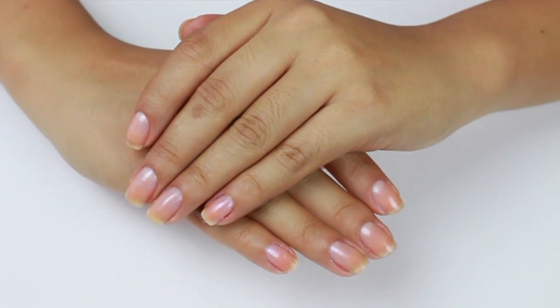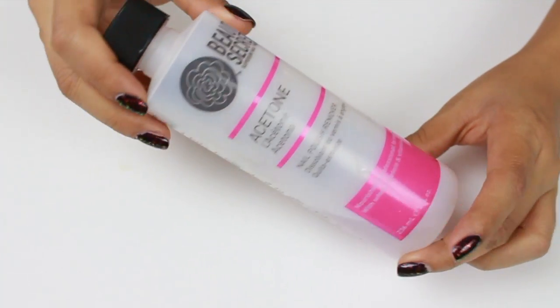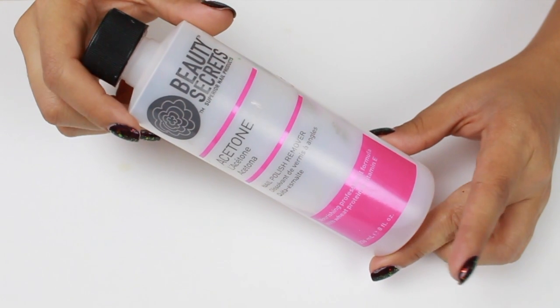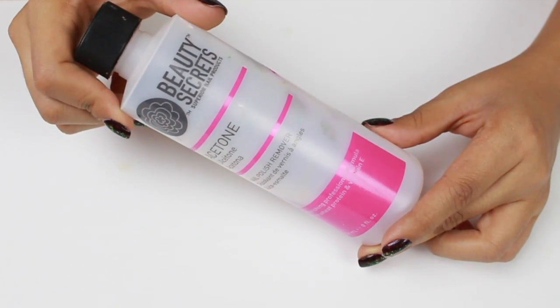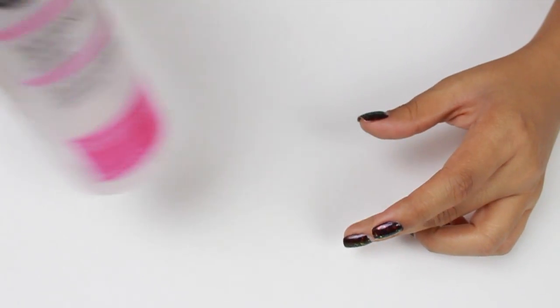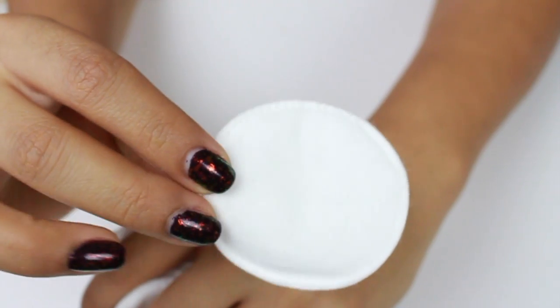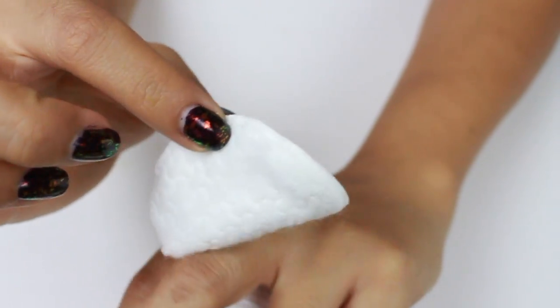I'm going to start with Beauty Secrets acetone, 100% acetone that you can get at Sally's Beauty Supply. I really prefer using this over any kind of nail polish remover. These are little cotton pads that I purchased at Costco. They're awesome, you can use them for your face as well as on your nails, and they're textured on one side and smooth on the other side.